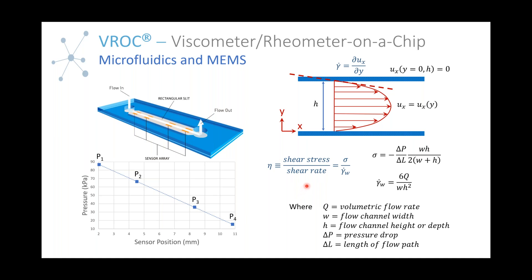We control the flow rate through the channel and monitor pressure drop across four pressure sensors. Since we have the geometric characteristics of the channel, we can calculate shear rate from the flow rate and channel dimensions, and shear stress directly from the pressure drop and channel geometry. Flow rate is proportional to shear rate, pressure drop is proportional to shear stress, and shear stress divided by shear rate gives viscosity.